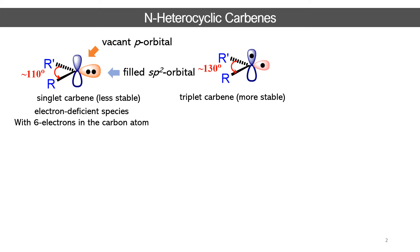These orbitals are generally a vacant p orbital for singlet carbene and a filled sp2 orbital. In the case of triplet carbene, both the p orbital and sp2 orbitals are singly occupied. The crucial thing here is the bond angle between R-C-R'. If the carbene is singlet, it has a lone pair, and the lone pair / C-R bond-pair repulsion is very high, resulting in a bond angle of generally around 110 degrees, giving a bent singlet carbene.